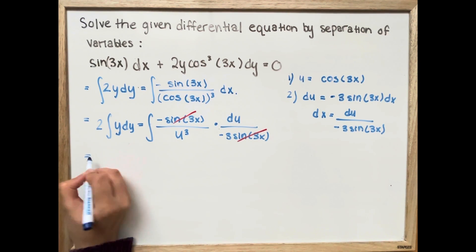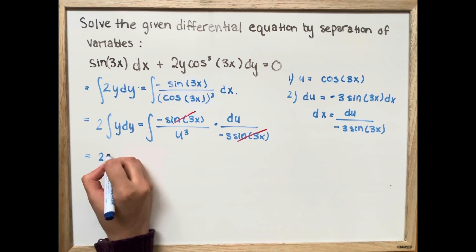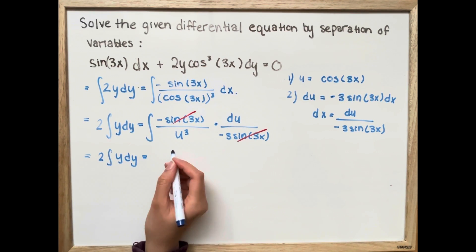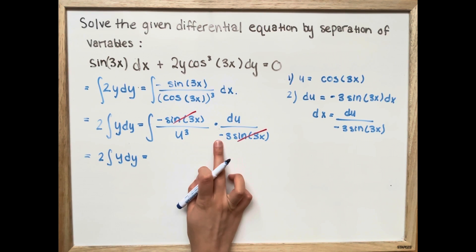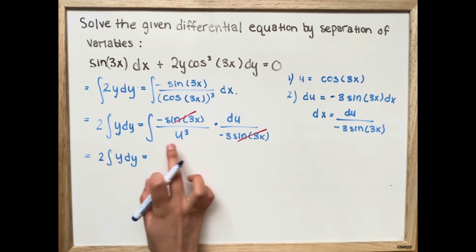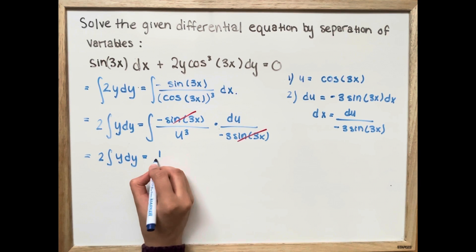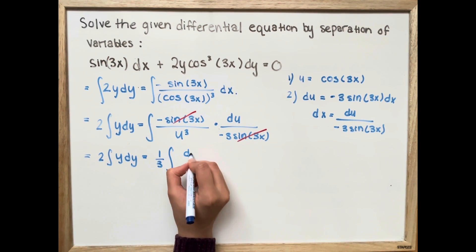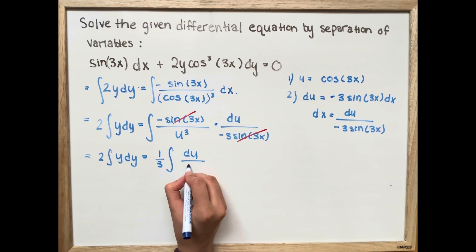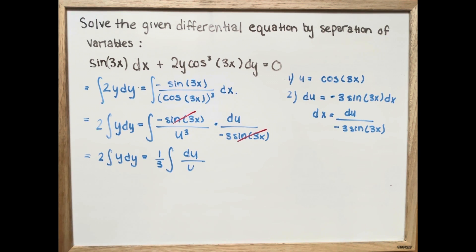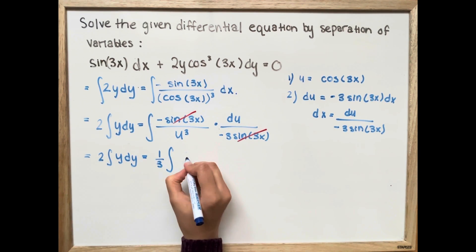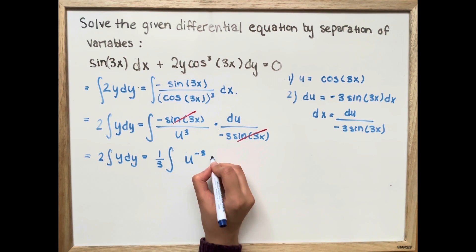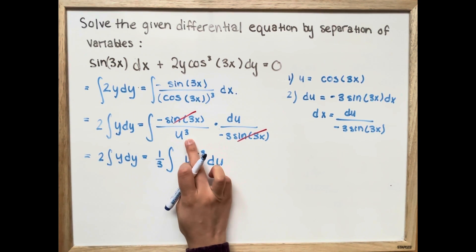The sine 3x terms cancel out. We rewrite this as 2 times the integral of y dy equals 1 over 3 times the integral of u to the power of negative 3 du, since we bring u to the power of 3 up to the numerator as u to the negative 3.